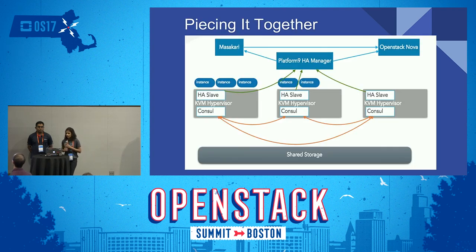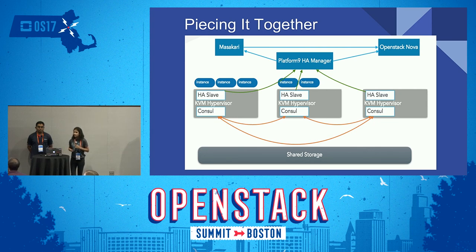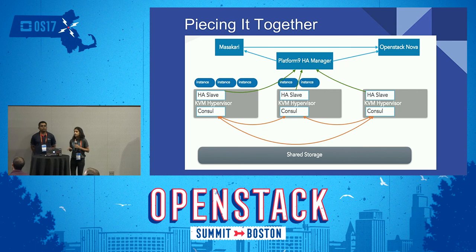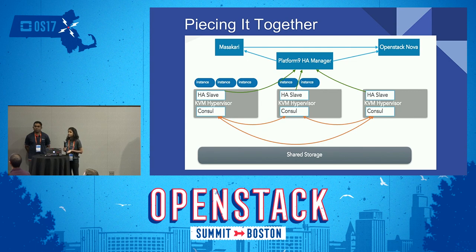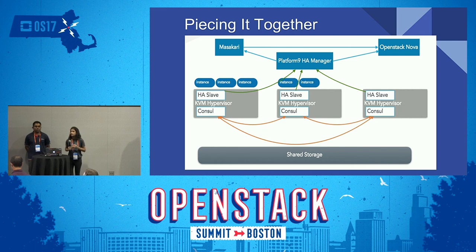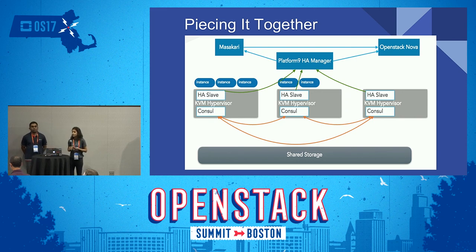With all these building blocks, how do they come together? We added a service called Platform 9 HA Manager. The top three services are part of your control plane, and HA Manager is responsible for automatically reconfiguring your HA cluster. If you have a Nova availability zone, you can enable HA, which creates a cluster within Consul. The HA Manager pushes cluster configuration to an HA Slave component running on all hypervisor nodes. HA Slave is a helper service for Consul that identifies whether it should run in client mode or server mode. All KVM hypervisors should be using shared storage so that Nova can evacuate once Masakari is notified that a node has failed and needs to be recovered.